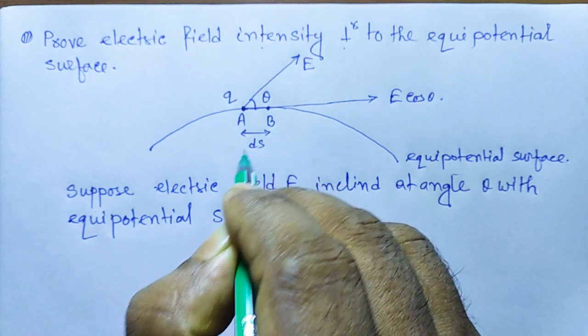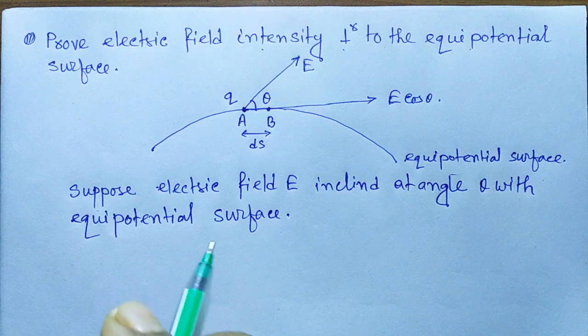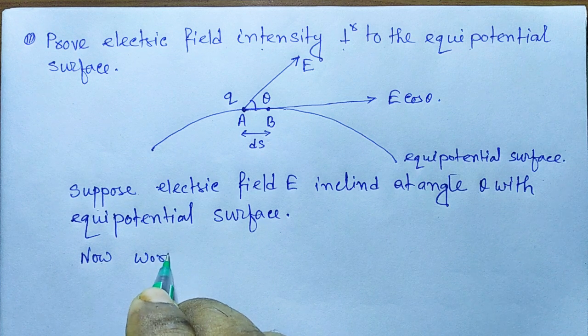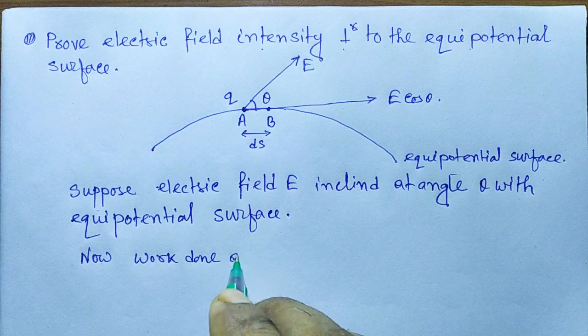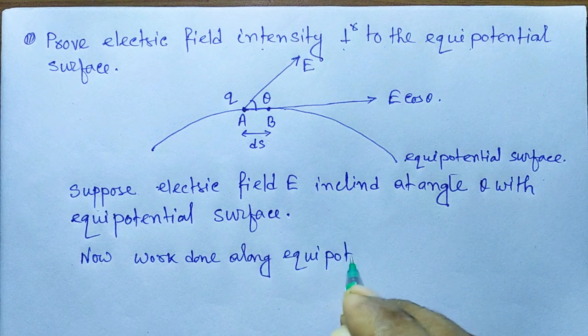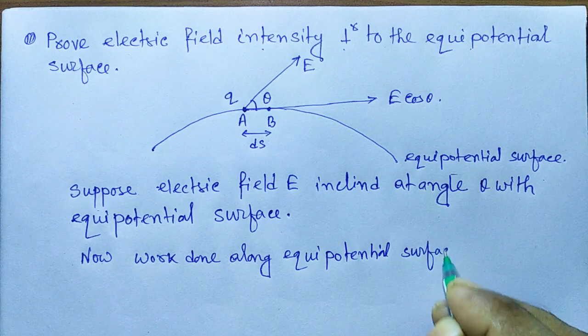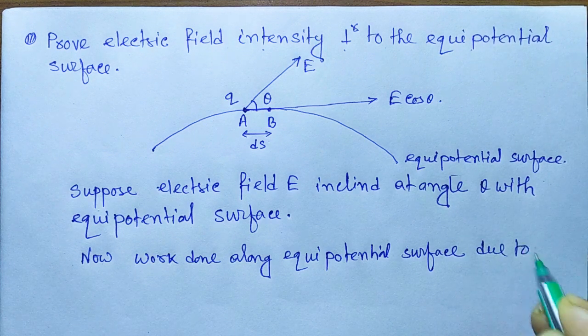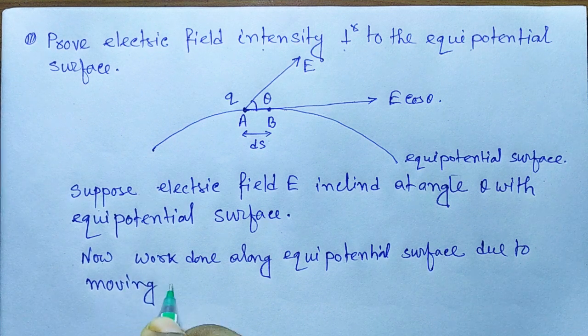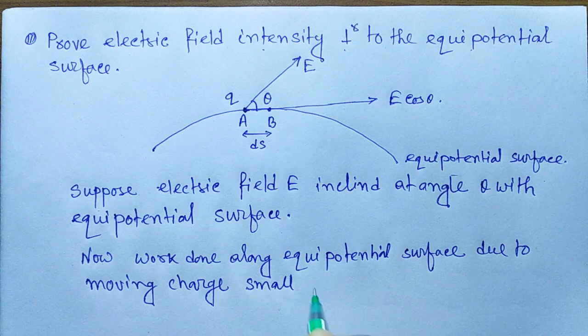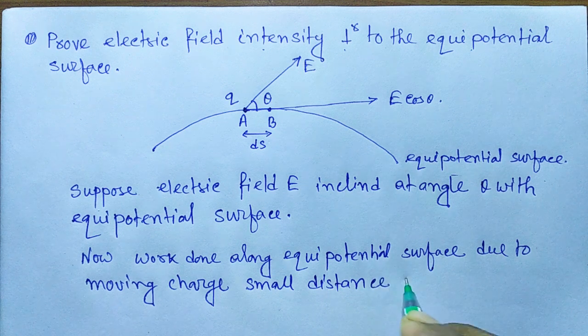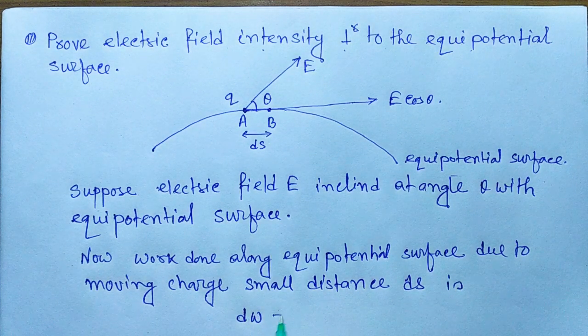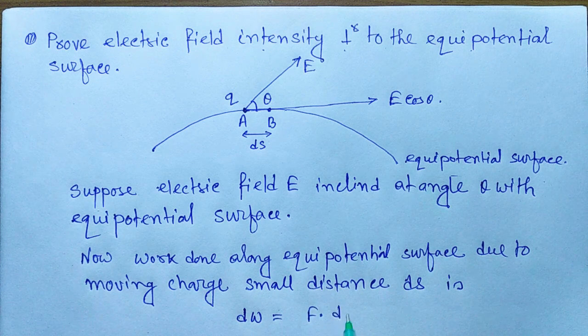The separation between A and B is very small, and these two points lie on the equipotential surface. The work done along the equipotential surface due to moving the charge through small distance ds is: dW equals F dot ds.